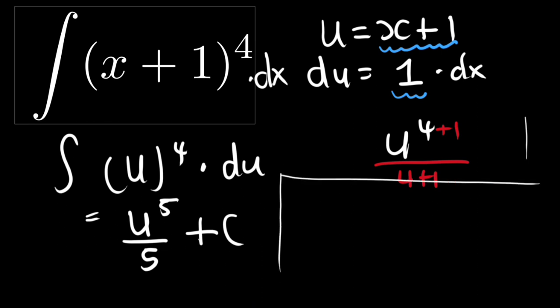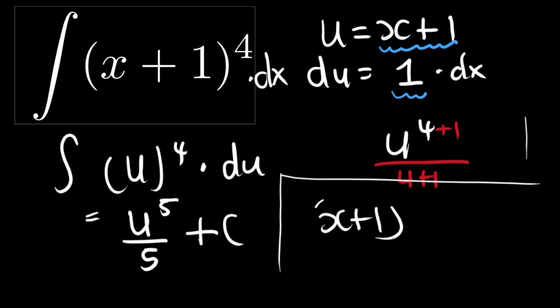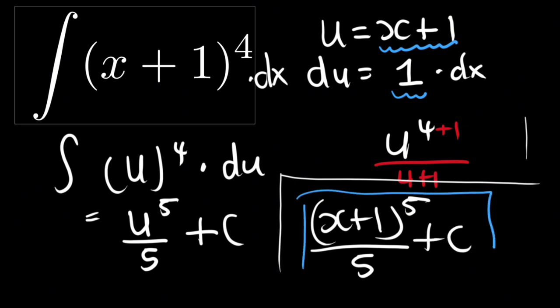We get the integral as u to the power five divided by five, and don't forget to always add the constant C. Now we return the original value: substituting back gives us x plus one to the power five divided by five plus C. That is your final integration.